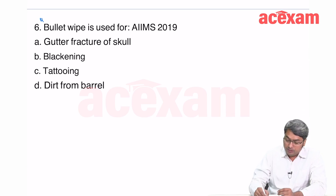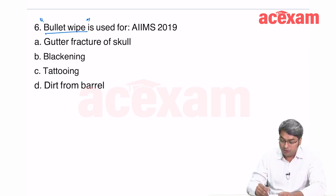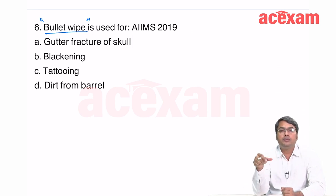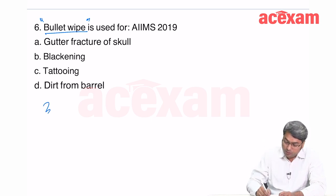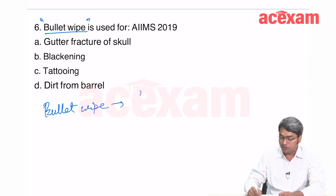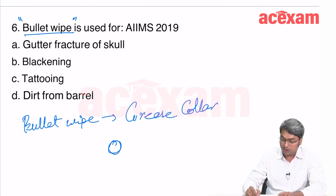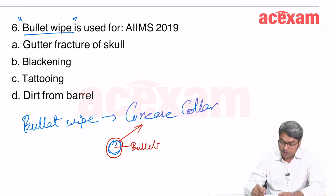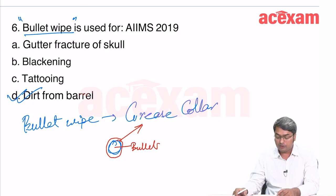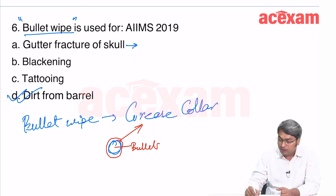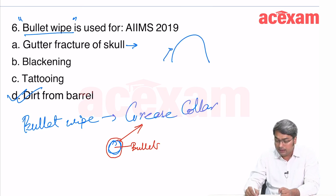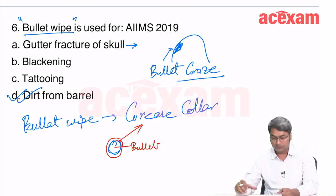Bullet wipe, asked in EAMS 2019, refers to the dirt or grease from inside the barrel that is wiped by the bullet — it produces the grease collar. So bullet wipe is used for 'dirt from barrel.' Blackening, tattooing, and gutter fracture of skull are not related. In a gutter fracture, a bullet grazes the skull without entering it, creating a small depression — called bullet grease, not bullet wipe.